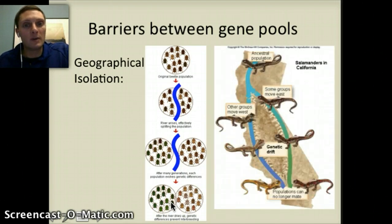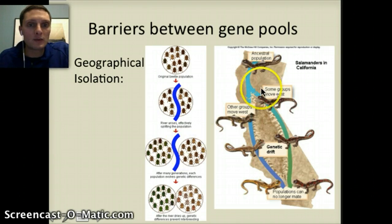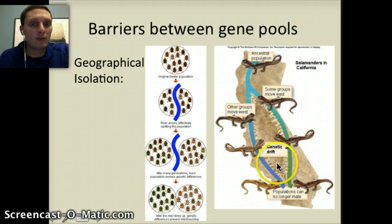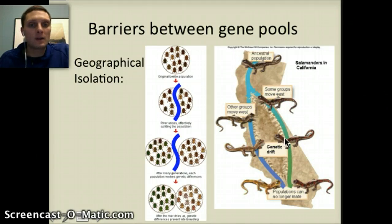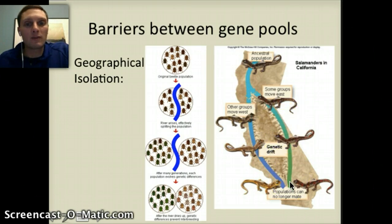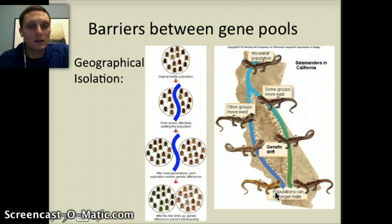We've actually seen this as a real-life example with salamanders moving down the coast of California. An ancestral population moved down from Oregon and Northern California, but the Sierra mountain range split California and blocked these salamanders from reproducing with one another. Some went down the coast, some went along the eastern, more inland edge. Through their migration and adaptations to different environments moving south through California, by the time they remet, they had changed so much over many years that they had essentially become two different species.